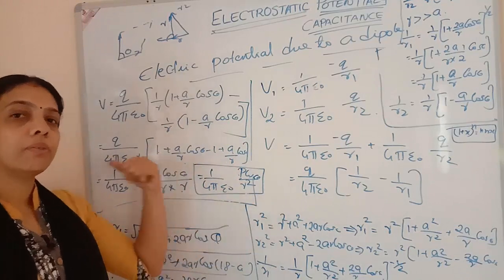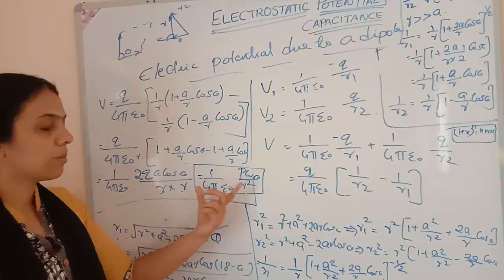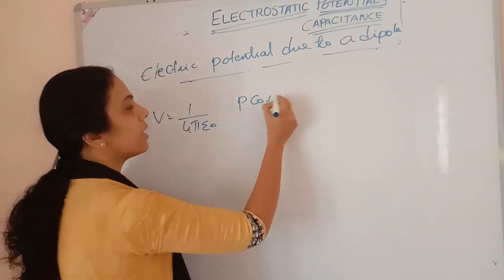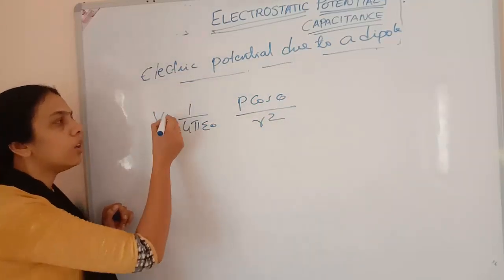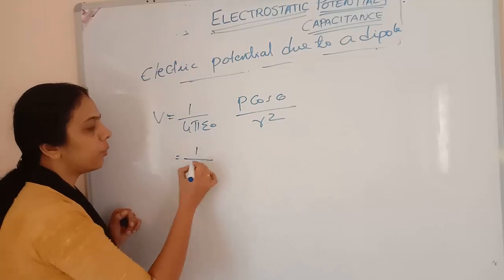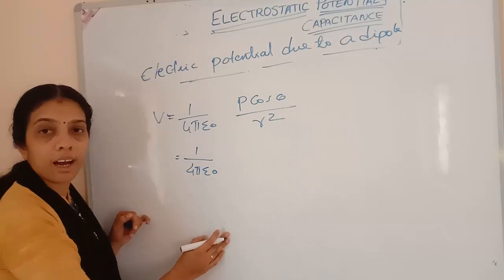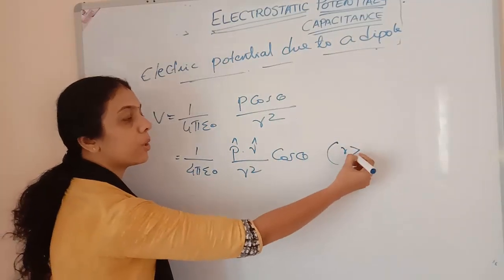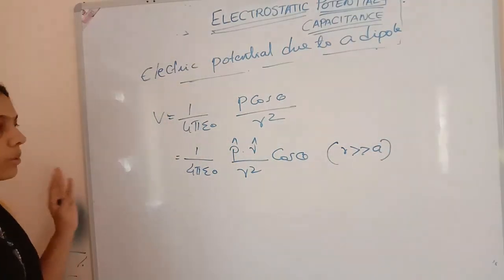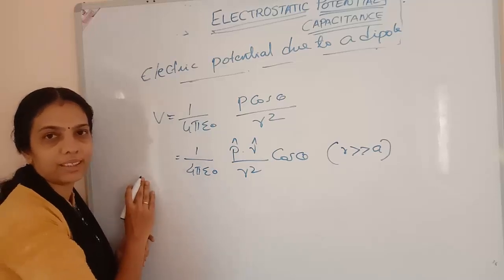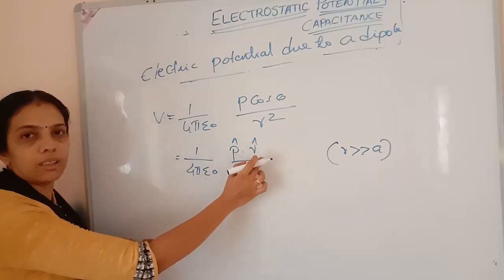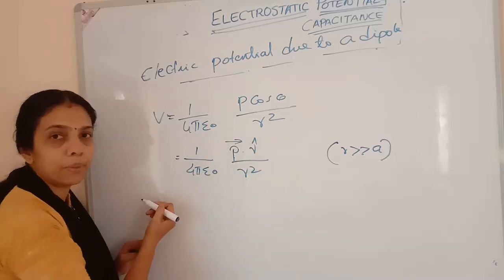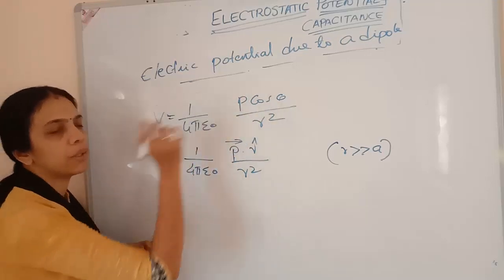Now you might think: p is a vector quantity but V should be scalar. We can write V equals (1 / 4πε₀)(p cosθ / r²) in vector form as (1 / 4πε₀)(p · r̂ / r²), because p · r̂ equals p cosθ, where r̂ is a unit vector with magnitude 1. This keeps V as a scalar quantity.